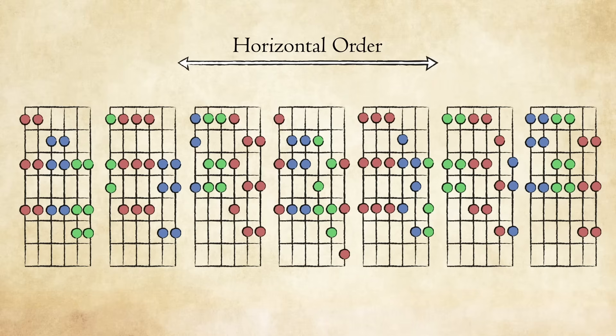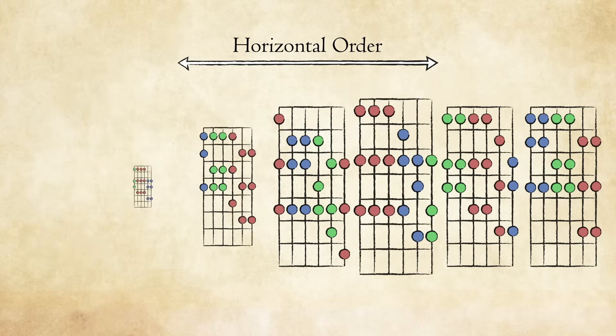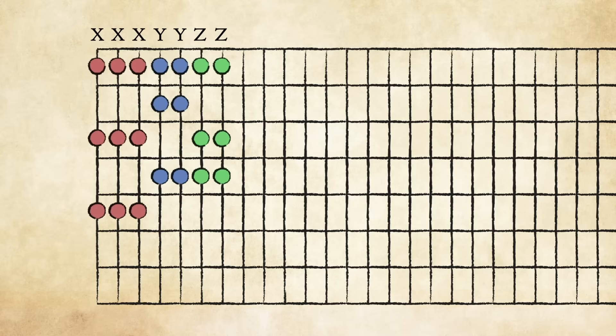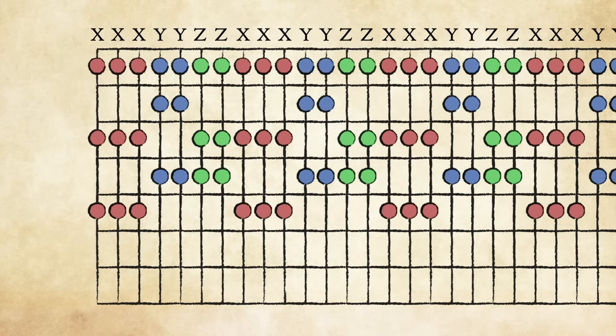Without going into too much detail as the reason for the shape order, a larger pattern of finger shapes emerges. Let's say we had a guitar with an infinite number of strings. The order of our finger shapes would repeat every seven strings, with the order of the shapes being XXXYYCC. The finger shapes will always appear in this order, without variation.